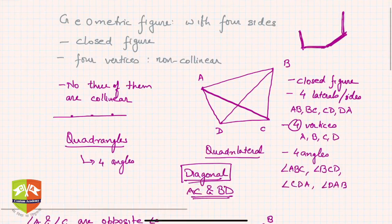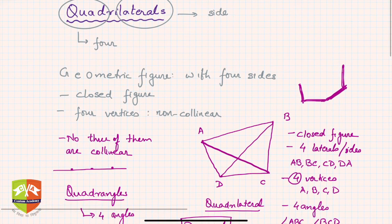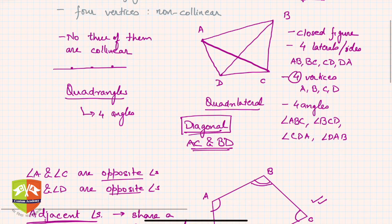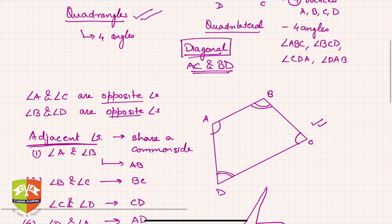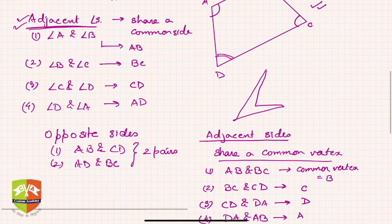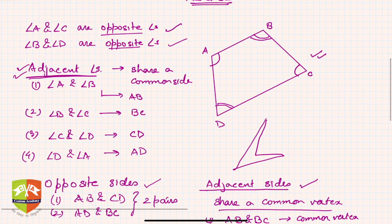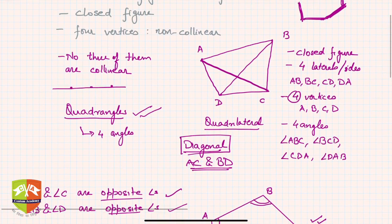In this session we learned what a quadrilateral is, what is meant by vertices, laterals, sides, and angles. We also learned that quadrilaterals are called quadrangles, and we understood opposite angles, adjacent angles, opposite sides, and adjacent sides. In later sessions we will be dealing with the properties of quadrilaterals. Thank you.